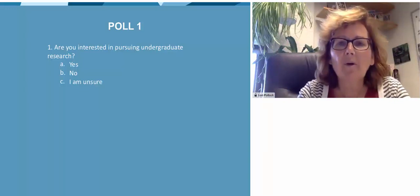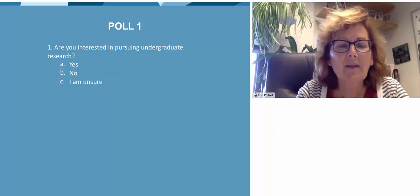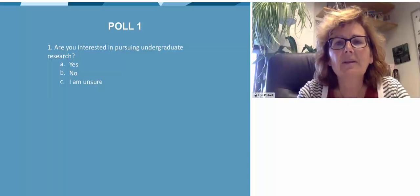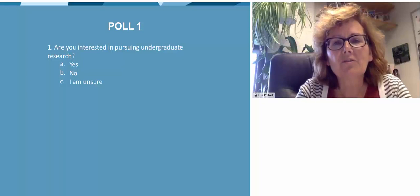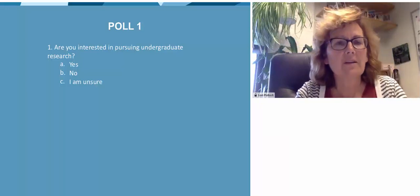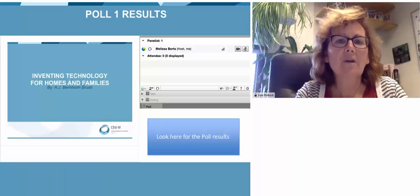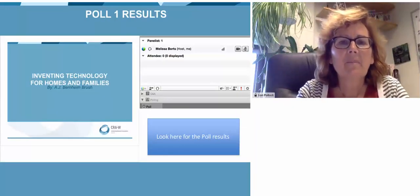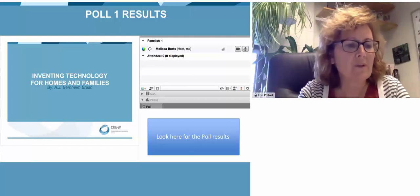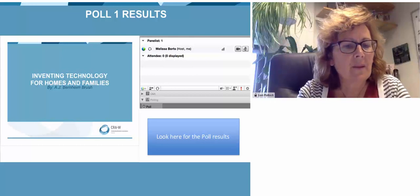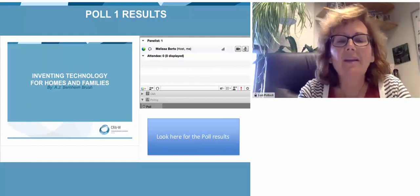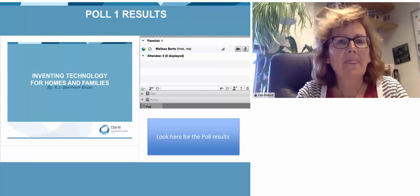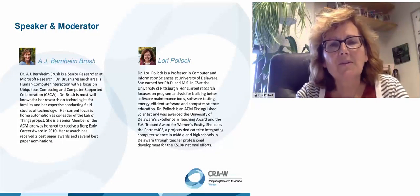We have a couple of programs for undergrad researchers: the DREW program and the CREW program. The DREW program is a way to do research in the summertime, while the CREW is during the academic year. If you want more information on these, just go to the CRAW.org website. So our poll results are in — it looks like we've had some people who are actually participating in undergrad research.